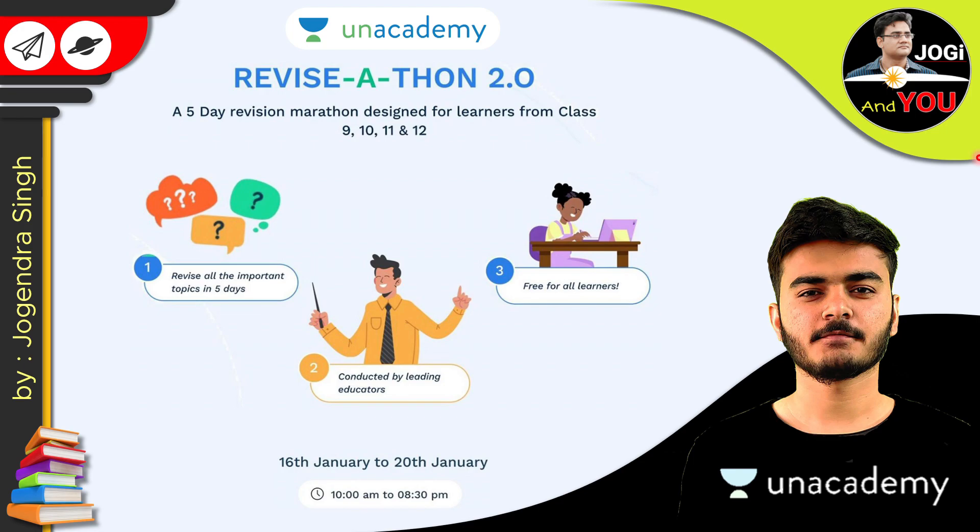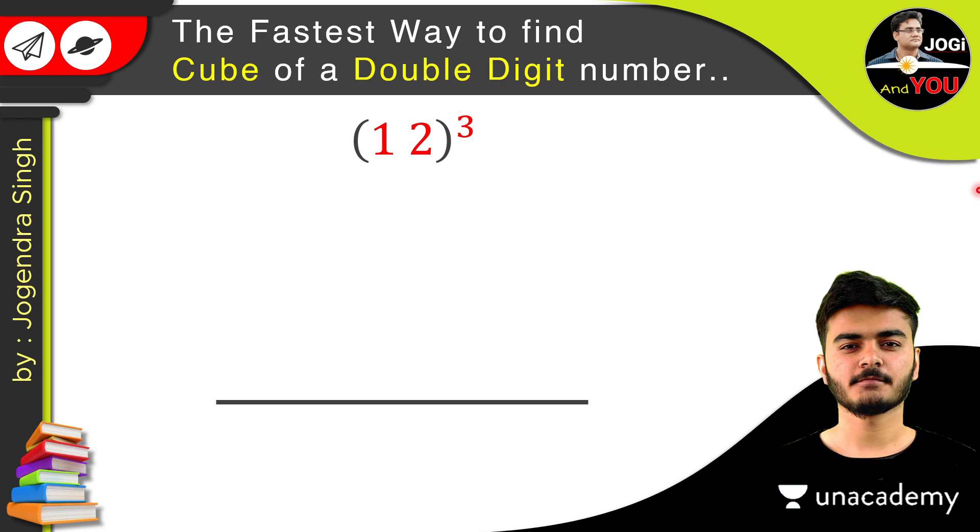Now let's come back to our current question. So here we write the first number 1, and then it's 6, and then 12, and in the last it's 8. So just add them all which is 8, 2, 6 plus 1 is 7, and 1. So the perfect cube of 12 is 1728.